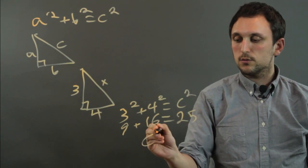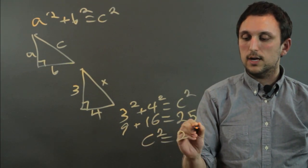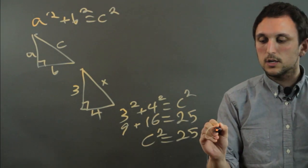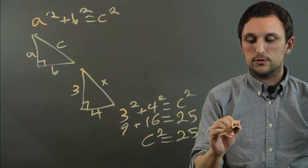And then you say, okay, well, C squared equals 25. Thus C equals the square root of 25, which is 5.